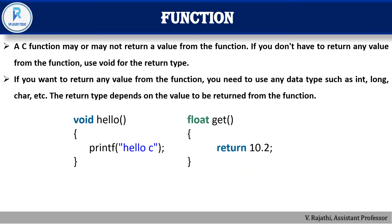Here is an example with two functions named hello and get. The hello function will not return any value, so we use the void data type. In the second example, we use the float data type because it returns a value of 10.2, which has a fractional part. These are two corresponding examples: one using void and another using float.